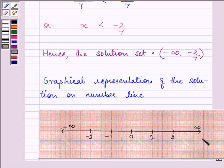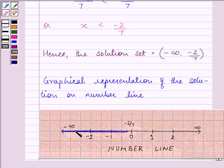So let's have a graph. Now x is less than minus 2 divided by 7. So here it is minus 2 divided by 7. And from here, we will show that this blue line is showing that x is less than minus 2 by 7.